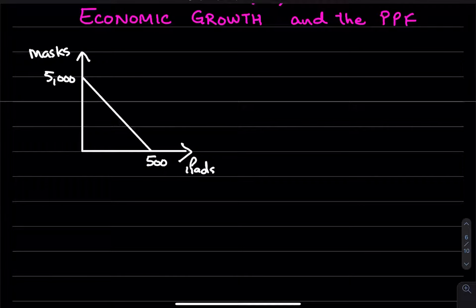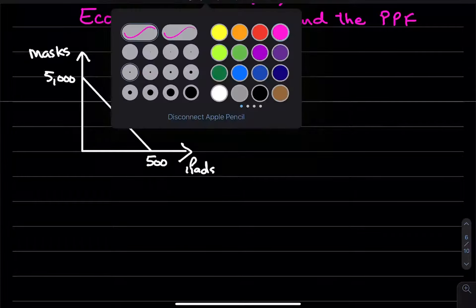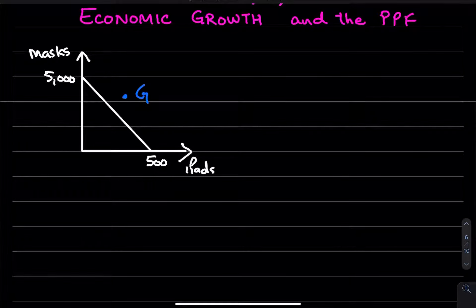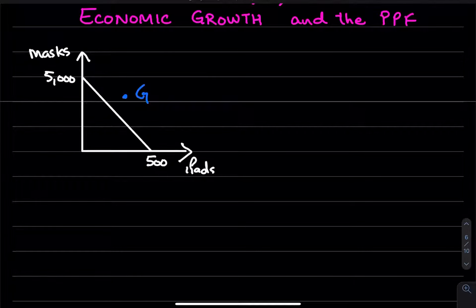A couple of videos ago we talked about a point G which was lying outside the production possibilities frontier. We didn't have enough resources to get to point G because we had scarce resources — a limited number of hours that we were endowed with in a month.